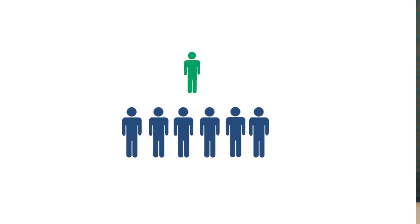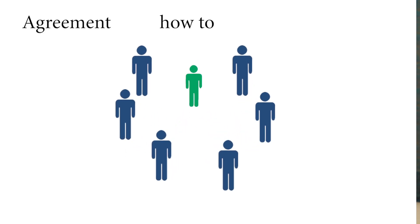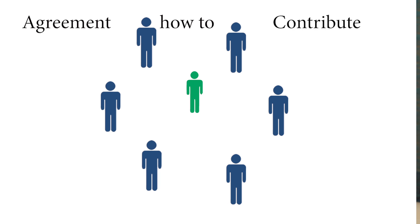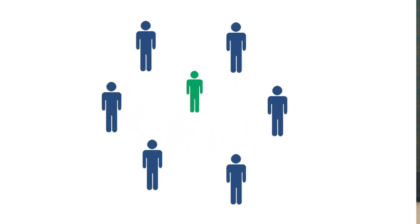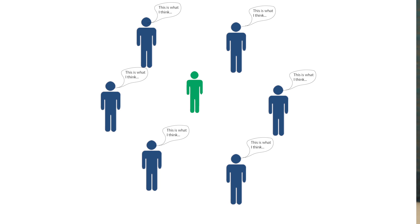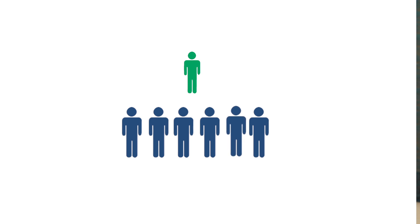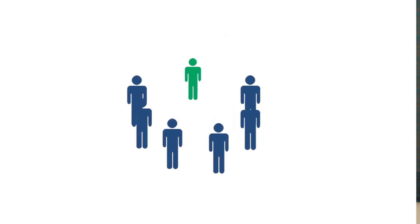Guideline number three is a simple one: you need to have an agreement with your team about when you, as the leader who is also facilitating, can contribute to the conversation. The suggestion is that you don't contribute until after everybody on the team has made their point around a particular question. Then you would tell the group: I want to step outside of my role as the facilitator and provide some input if it hasn't been covered by participants so far. It's a way of switching hats between a leader hat and a facilitator hat.